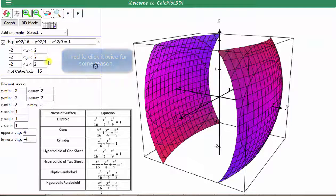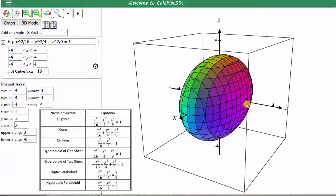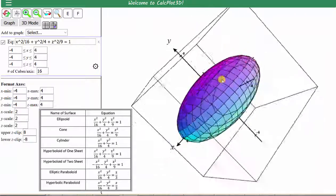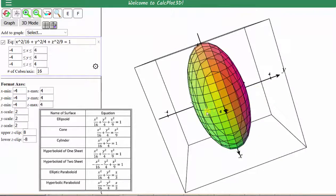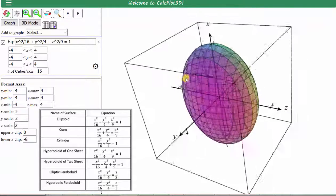Instead of adjusting the window, let's just zoom out by clicking on this minus here, and now we have a nice graph of the ellipsoid. We can also make the surface transparent by clicking on this magnifying glass here, which allows us to see through the ellipsoid.